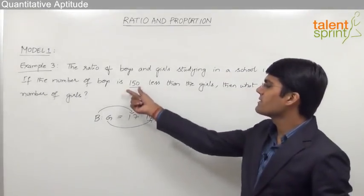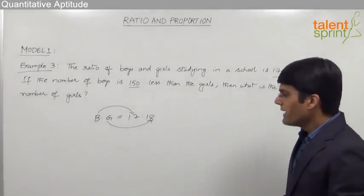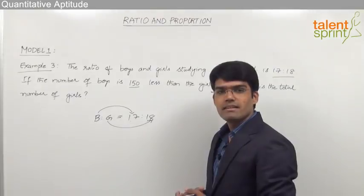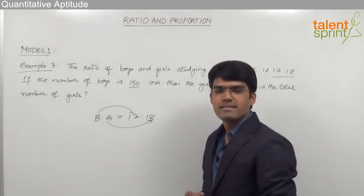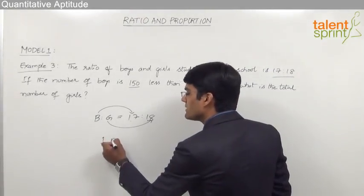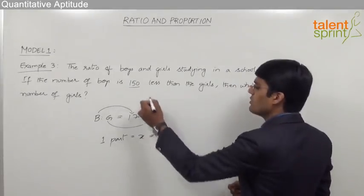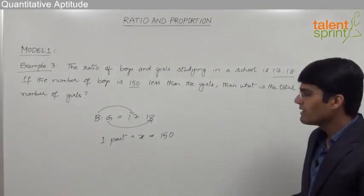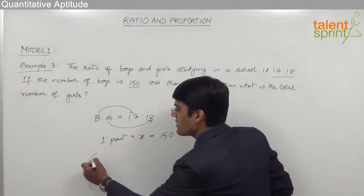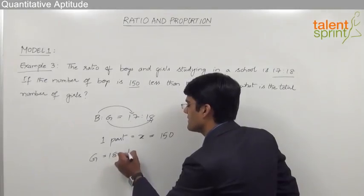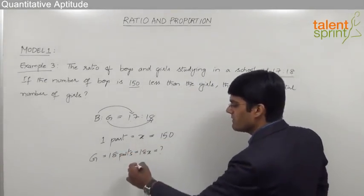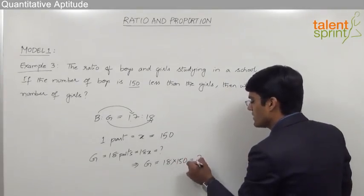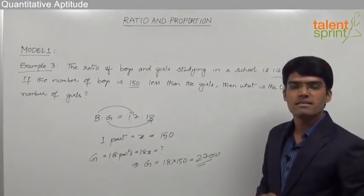The next statement says the number of boys is 150 less than the girls. The girls have 18 parts and boys have 17 parts, so boys are one part less than girls. That one part, x, equals 150. We need to find the total number of girls, which is 18 parts, or 18x. So the number of girls equals 18 × 150, which comes out to 2700. The total number of girls in the school is 2700.